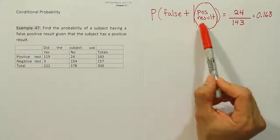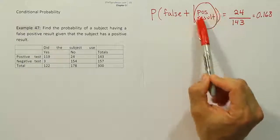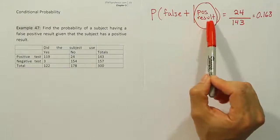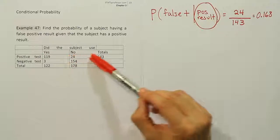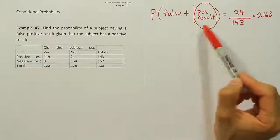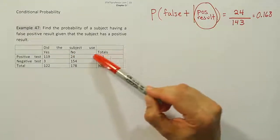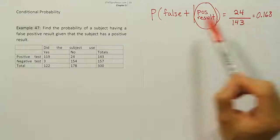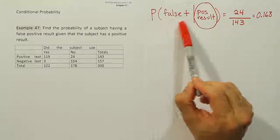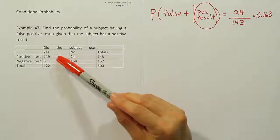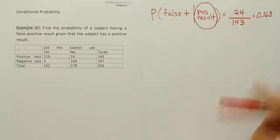And then from there, we focus all our attention on this part here, the positive result part. We pay attention only to that row. Once we've looked at that row exclusively, we pick the total of that row to be the denominator, and then we have to just figure out what remaining number corresponds to this category, which is false positive, and in this case it was the 24.